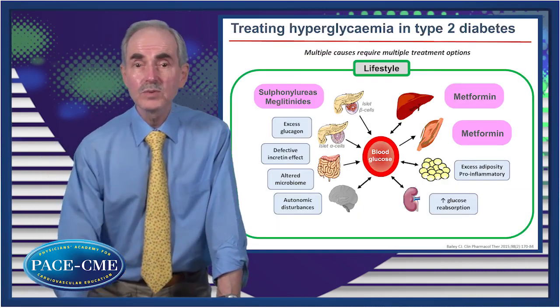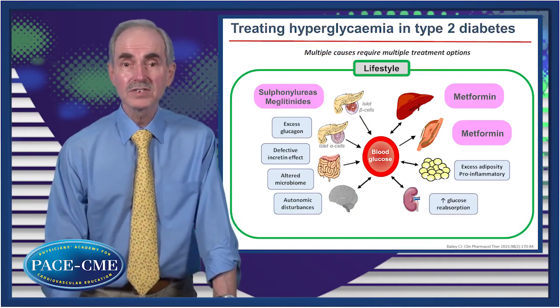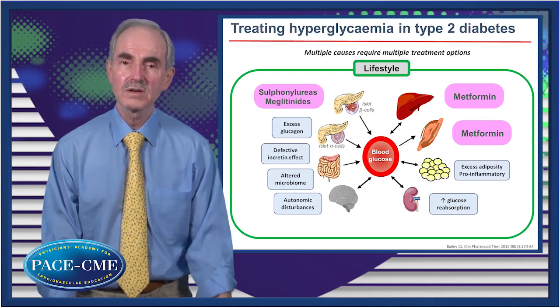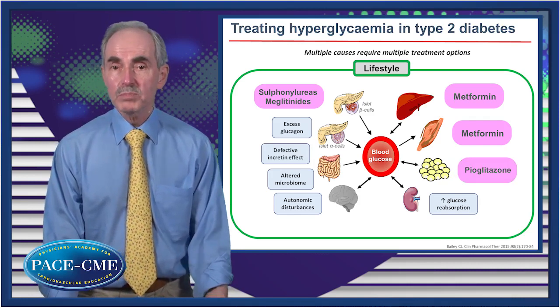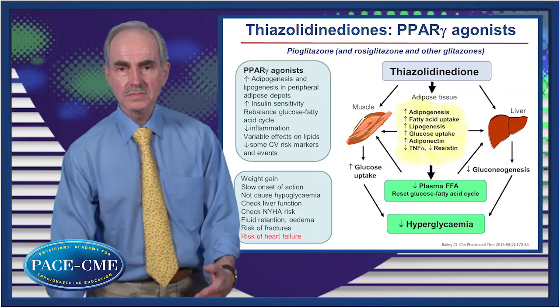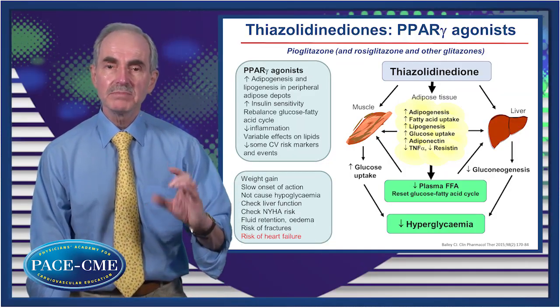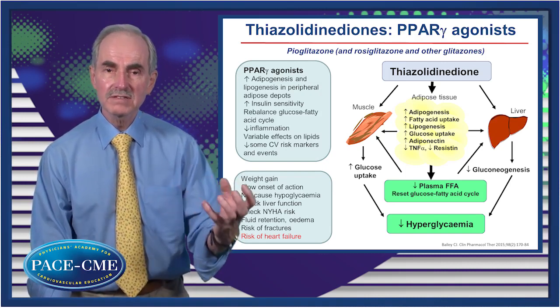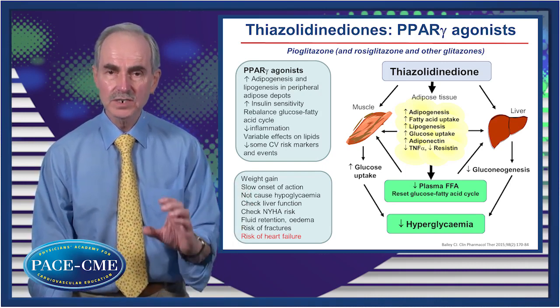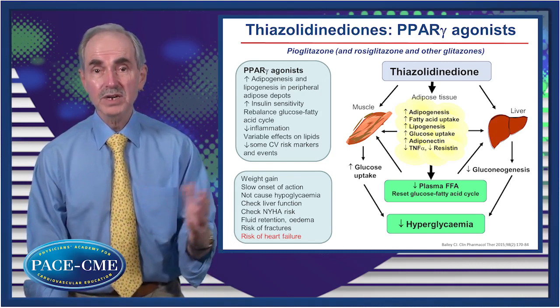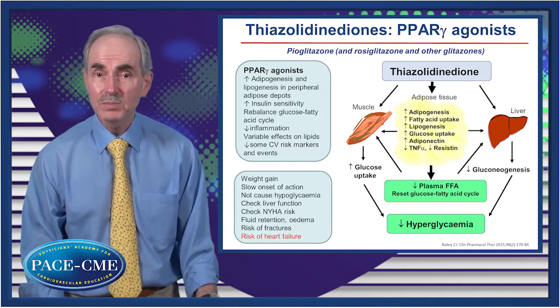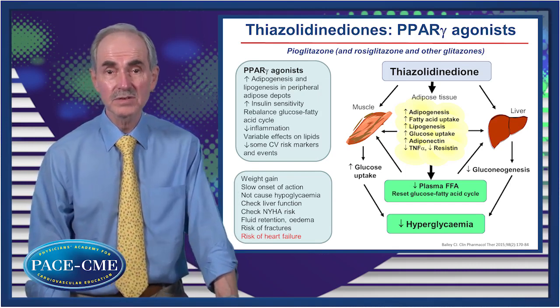If you need more insulin, you can stimulate insulin secretion with sulfonylureas or meglitinides. Sulfonylureas tend to be longer acting; meglitinides are prandial insulin releasers. We also have pioglitazone, a PPAR gamma agonist, which acts on adipose tissue to increase adipogenesis and lipogenesis. In making new adipocytes that are insulin-sensitive, it takes away ectopic fat from other tissues. There is a risk of weight gain, but not a risk of hypoglycemia — unlike sulfonylureas and meglitinides, which do carry that risk.